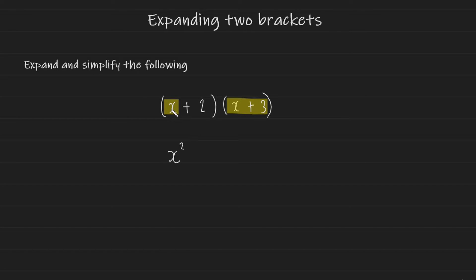And then we're going to have x multiplied by positive 3, which gives us plus 3x. And you'd write it below the brackets just like this.